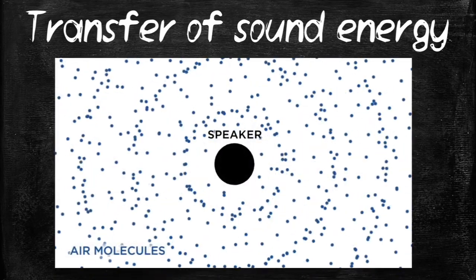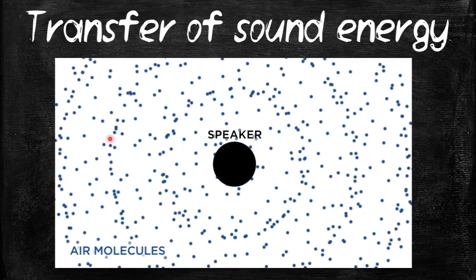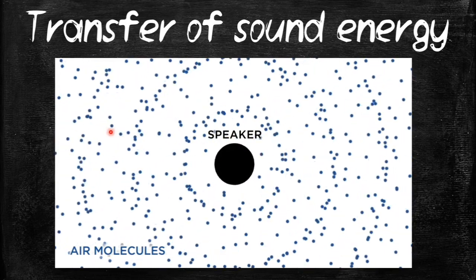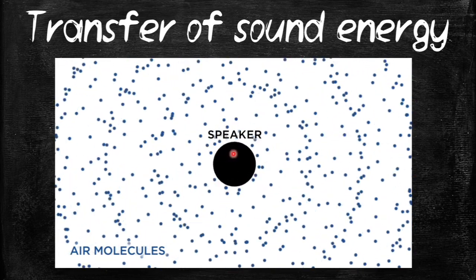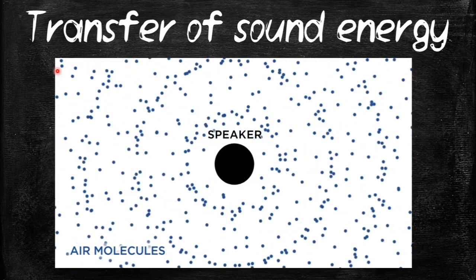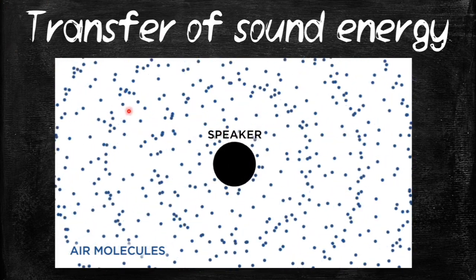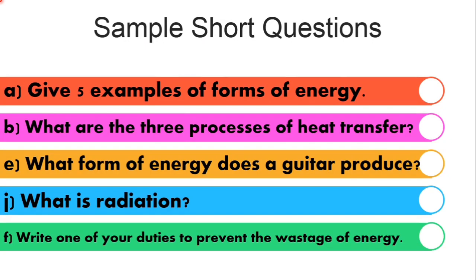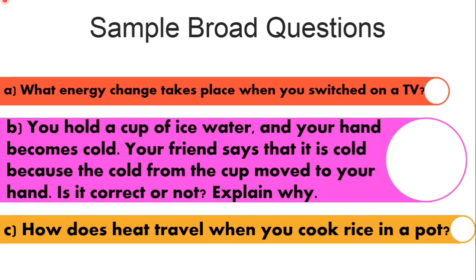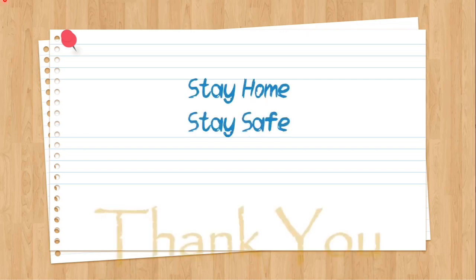Let's see how sound energy can transfer. Look at the picture — there is a speaker in the center creating sound. Those small particles are air molecules. When the speaker makes sound, this energy strikes the nearby particles of air, and then these particles move away from the speaker. Thus, sound energy is transferred from one place to another using the medium. Dear students, there are some sample short questions and broad questions — you will get all their answers in your sheet provided by your school. I hope all of you enjoyed the class today. See you again in my next video. Till then, stay home, stay safe. Thank you.